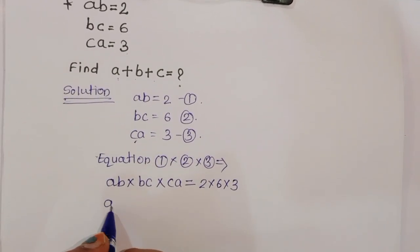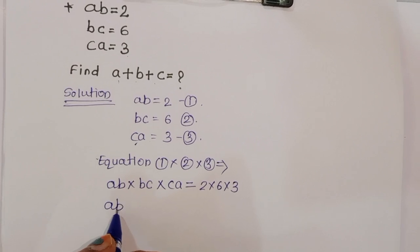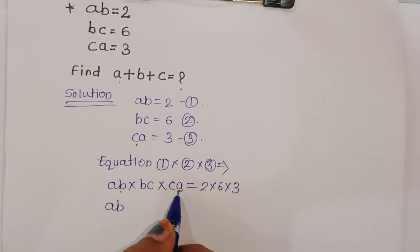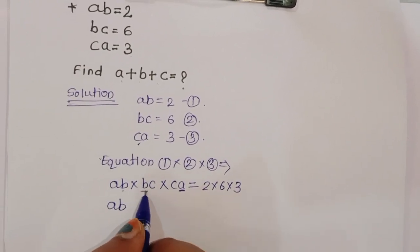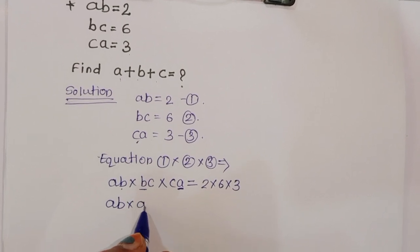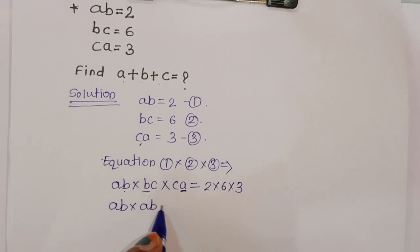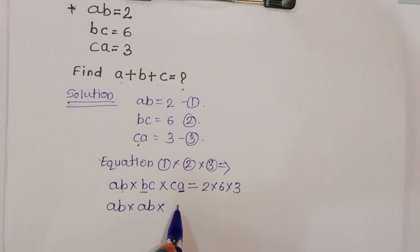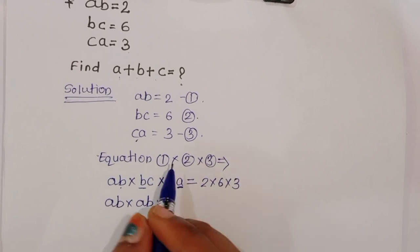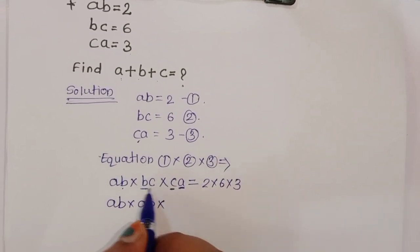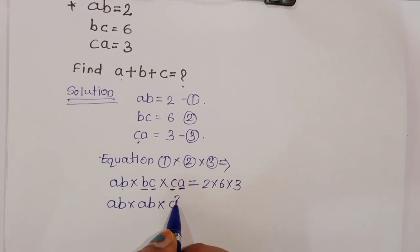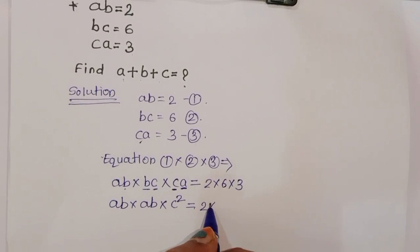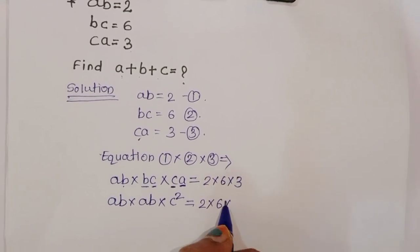Now, AB times BC times CA — we can rewrite the left-hand side. Collecting terms: A squared, B squared, C squared is equal to 2 times 6 times 3.